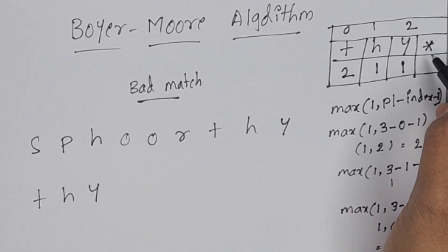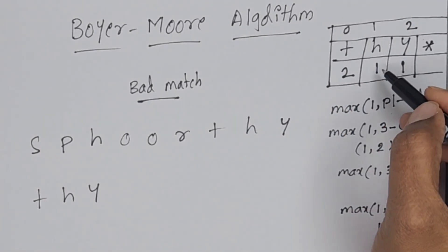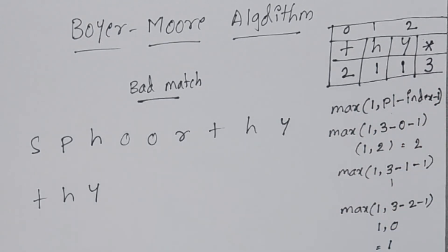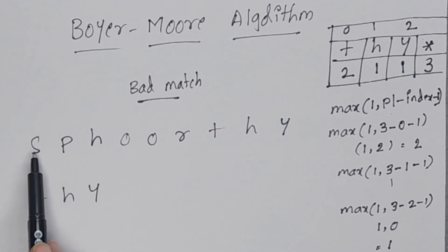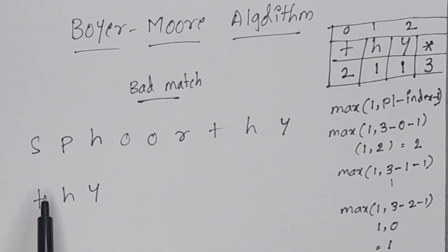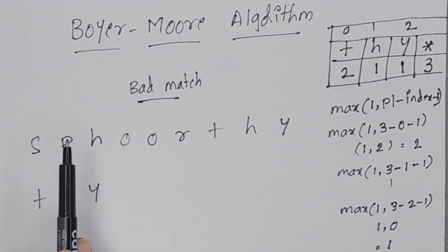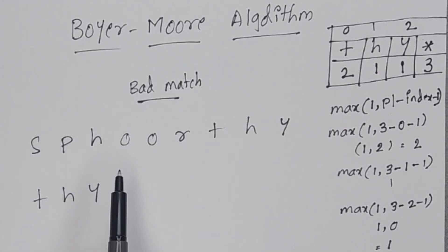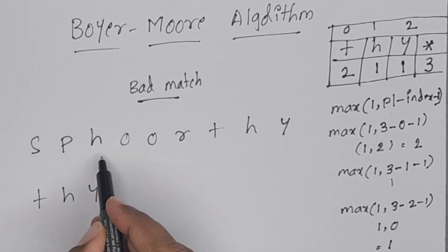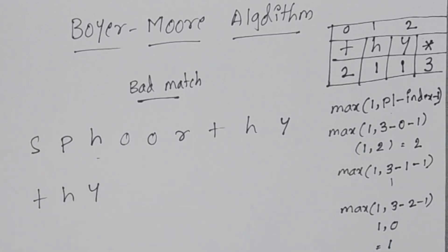For asterisk, we always have to assign the pattern length. Here, the pattern length is 3, so for asterisk we assign 3. Now, comparison starts from the first character, but in this algorithm it is a little bit different — comparison always starts from right to left, not left to right. So we compare the rightmost characters.